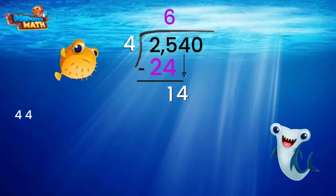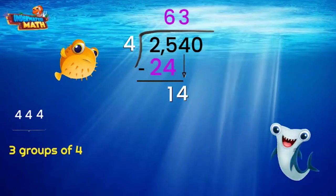Brilliant! We put our 3 above the 4 that we brought down. Then we multiply: 4 times 3 is 12, and we subtract. I told you this was fun!